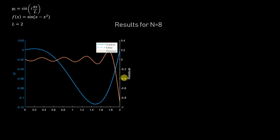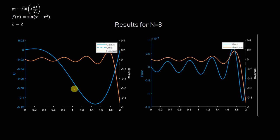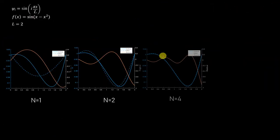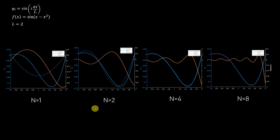For n equals 8 you can't distinguish between the actual and trial solution — they're almost identical. There is still a small error, but as you keep increasing the dimension of the space you will definitely approach the exact solution and the error will keep reducing. Comparing all results, as we increase n the solution becomes closer to the actual one, error reduces, and the residual tries to flatten toward the zero line.